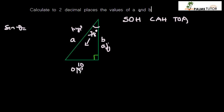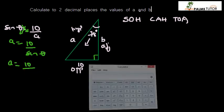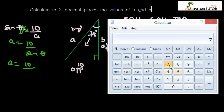So sine theta equals opposite over hypotenuse. Opposite here is 10 and hypotenuse is a, our unknown. By cross multiplication, a will be equal to 10 over sine theta. Our a equals 10 over sine 78 because our theta is 78.